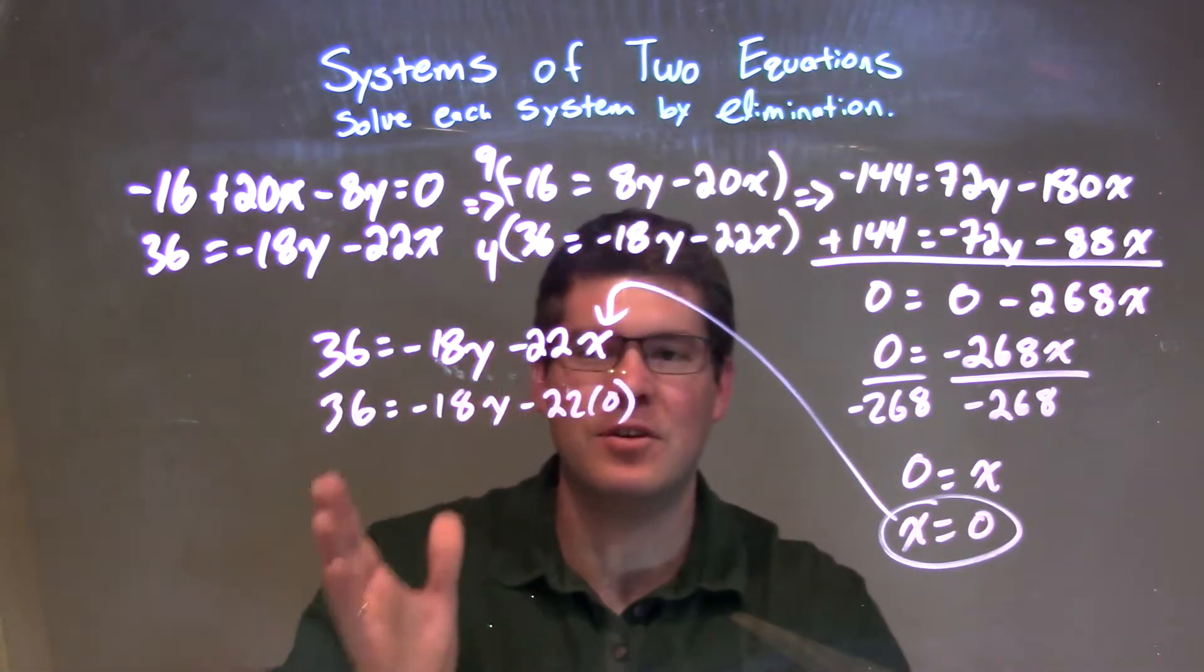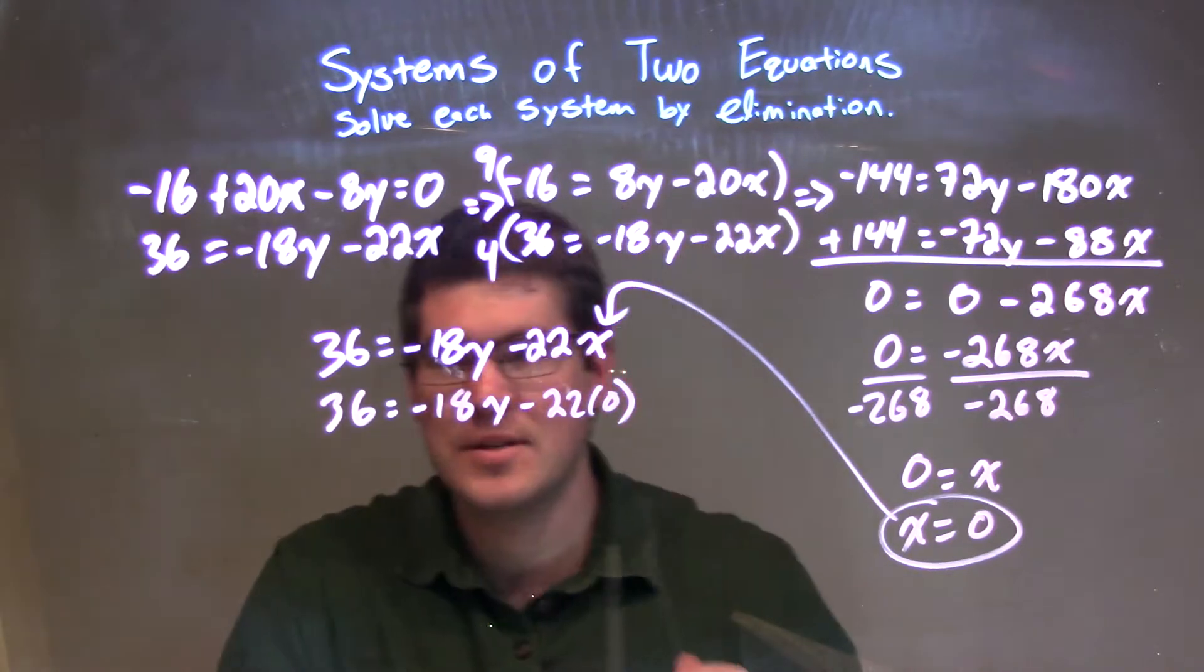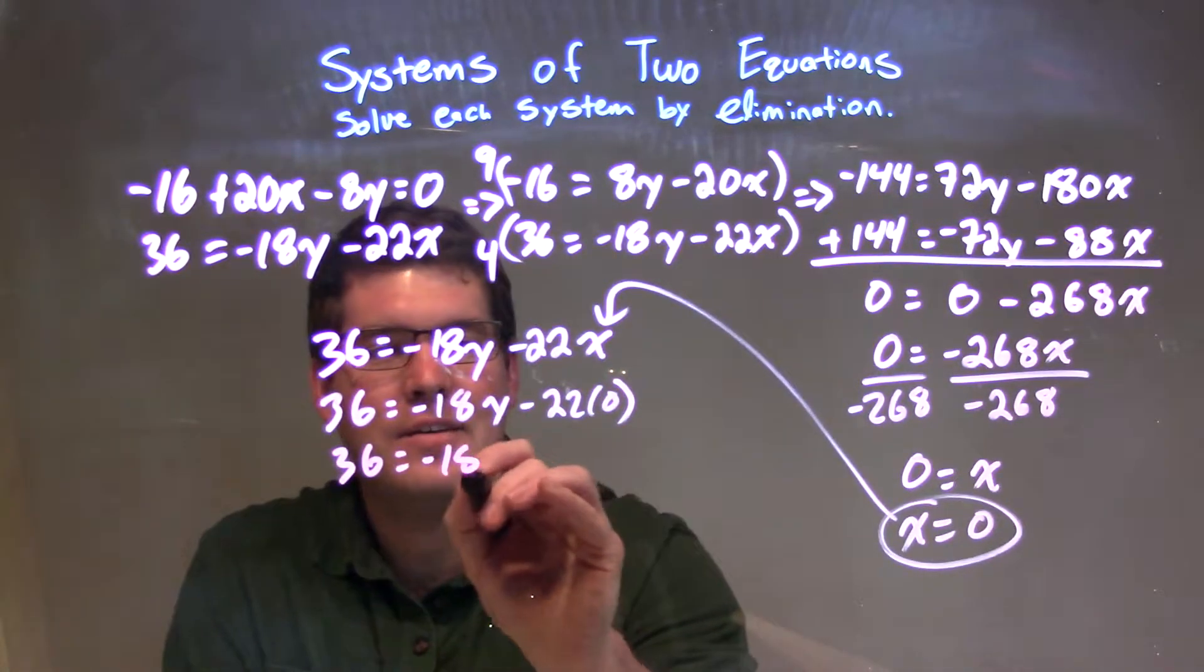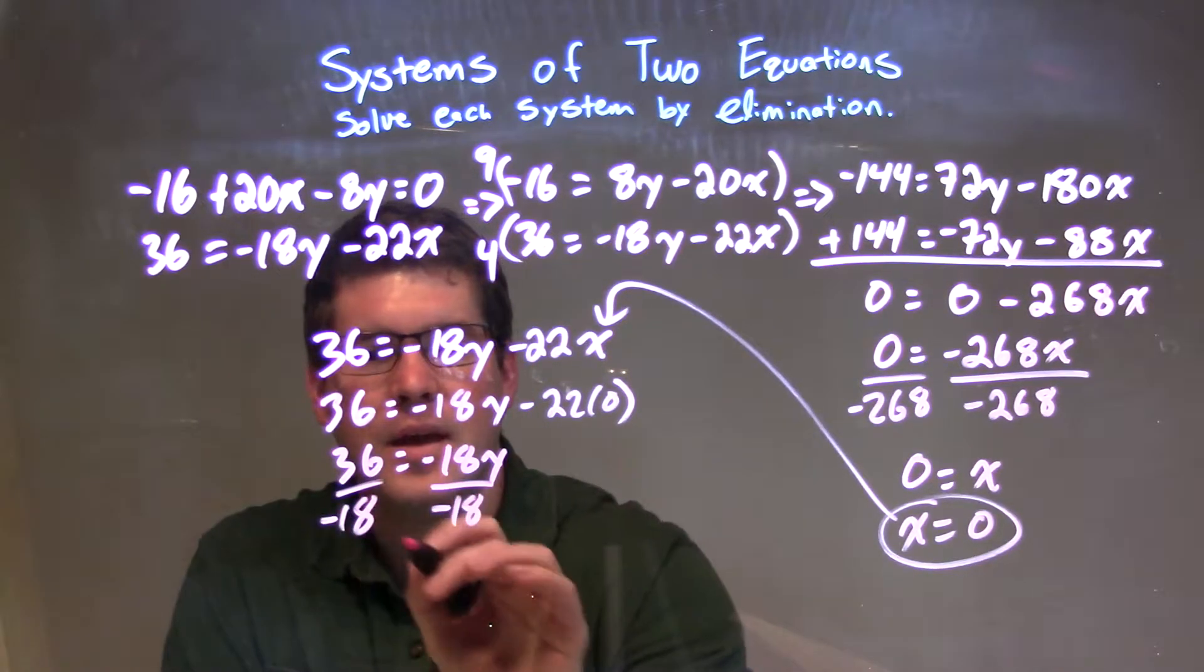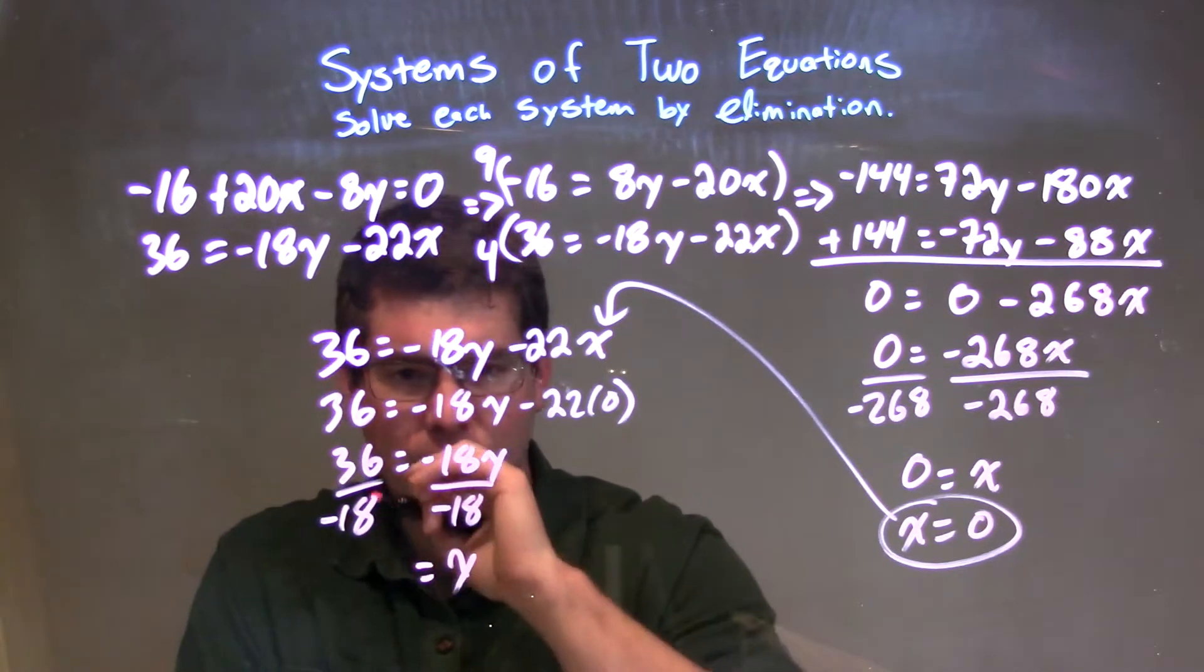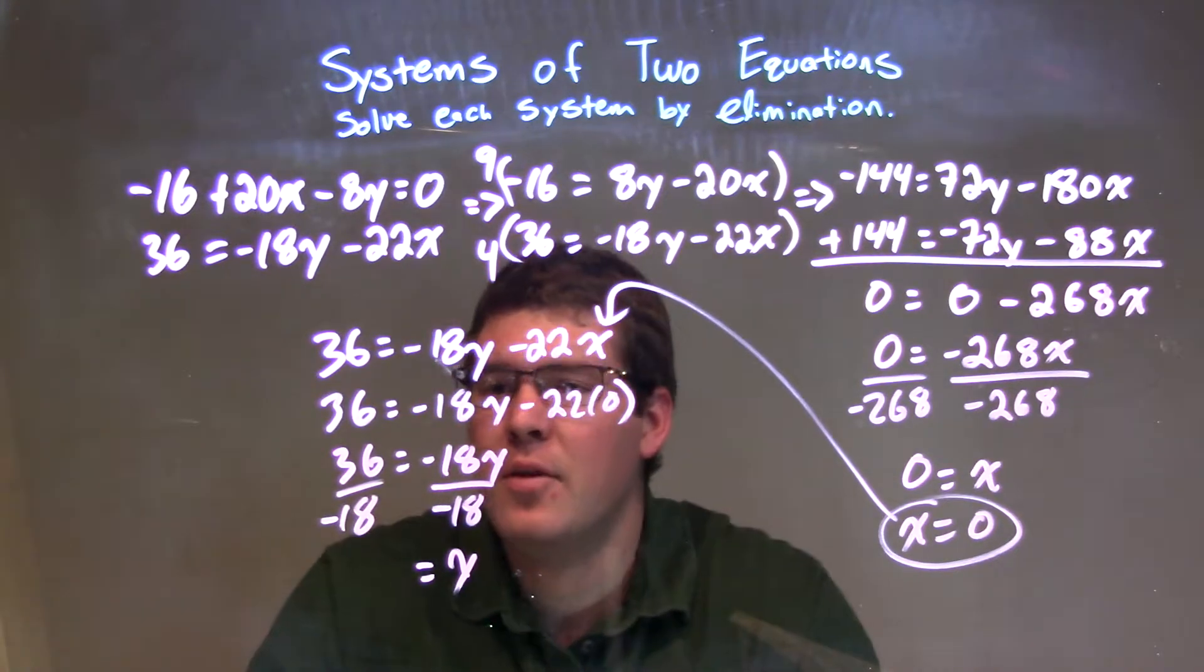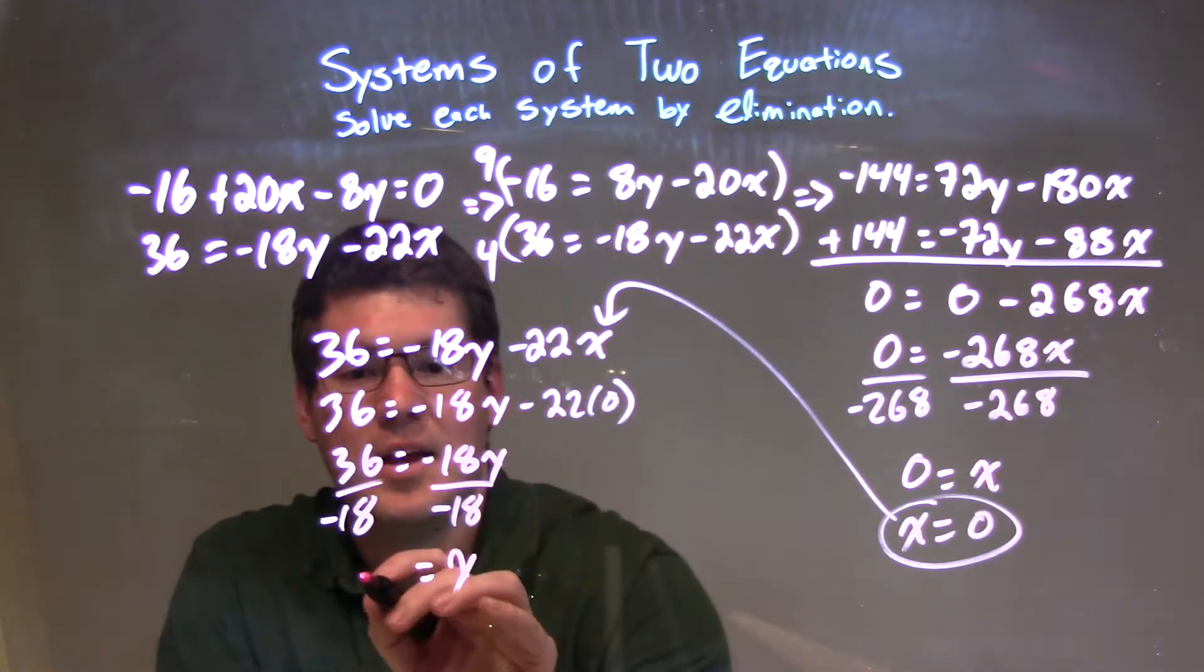36 equals negative 18y minus 22 times 0. Anything times 0 is just 0, so we're done with that. 36 equals negative 18y. Divide by negative 18 to both sides. And 36 divided by negative 18 is negative 2.